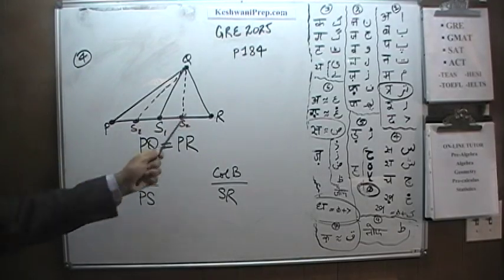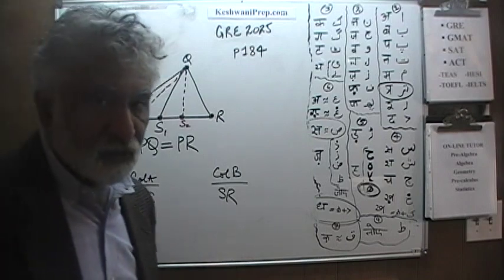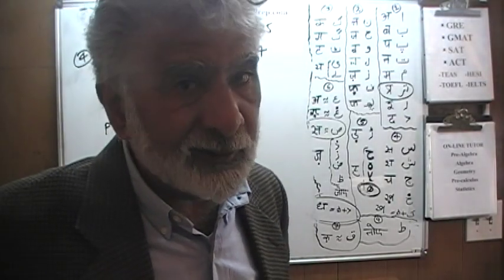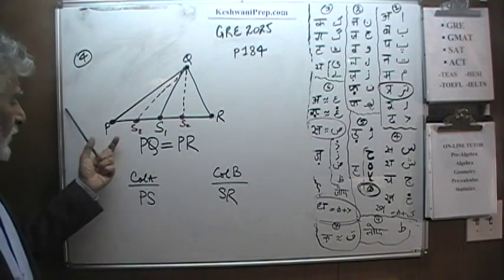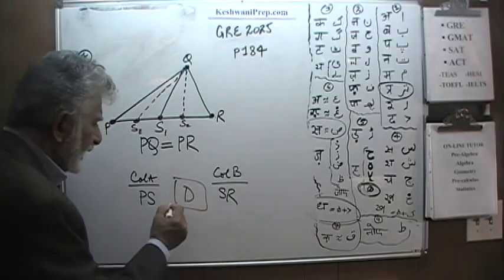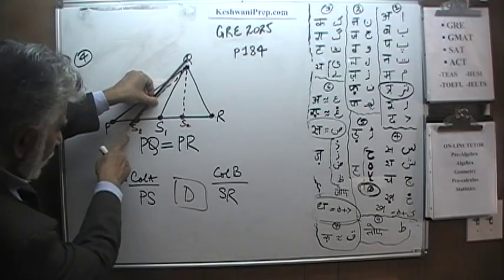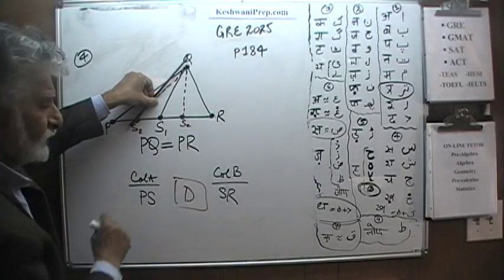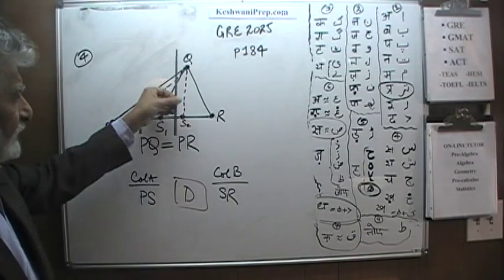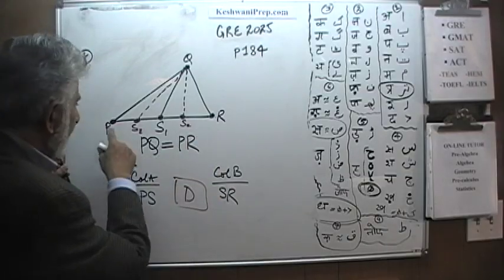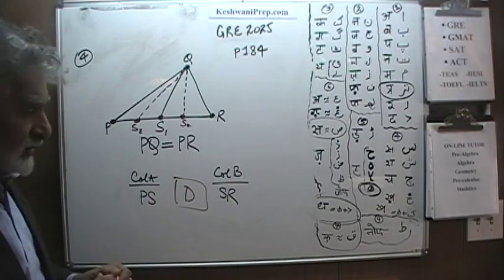If it is S1, you can't go by the look. This ain't a beauty contest. We can't really tell. I am making too much fuss about it. The answer is D. You can't really tell. We don't know where this stick is sitting. If it is sitting here, then P to S is very little compared to S to R. If it is exactly in the middle, they are going to be equal. Or if it is here, then S to R is going to be very little and P to S is going to be very large. The answer can be either A, B, or C. Correct answer is D.